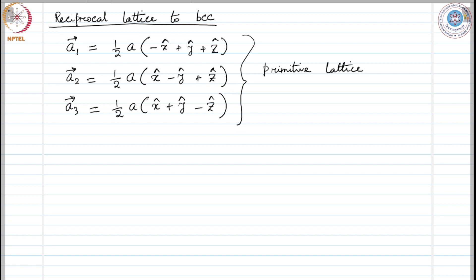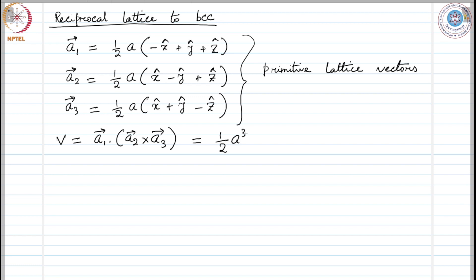Now we need to find the cell volume, that is a1 dot (a2 cross a3). You have probably already worked it out and found it to be half-a cubed. With this and with our usual prescription for finding the reciprocal lattice vectors b1, b2, and b3: b1 is given as (2π/a)(ŷ + ẑ), and b2 is given as (2π/a)(x̂ + ẑ).